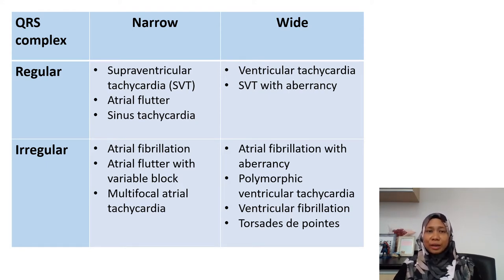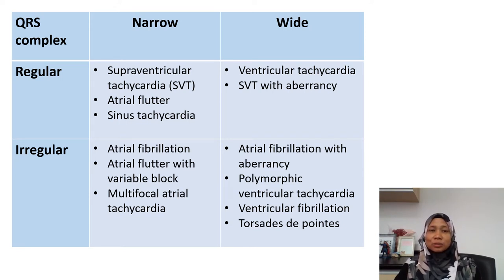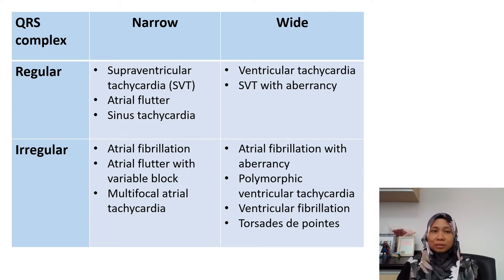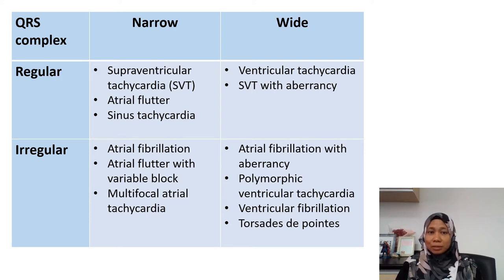If we see a regular narrow complex, the differentials would be supraventricular tachycardia, which includes junctional tachycardia, and then we also have atrial flutter and sinus tachycardia. I know sinus tachycardia is not a tachyarrhythmia but I still put it here so that we won't forget. If we have an irregular narrow complex tachycardia, it can be due to atrial fibrillation, atrial flutter with variable block — because usually atrial flutter is regular, however if there is variable block at the AV node the impulses conducted to the ventricles are not at the same rate, giving an irregular rhythm — and we also have multifocal atrial tachycardia.